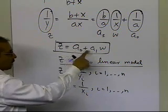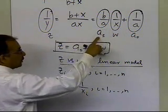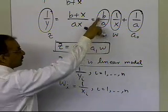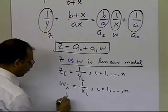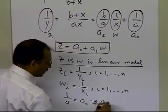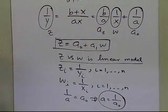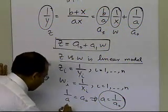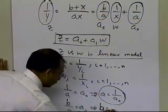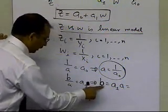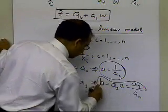But these are not the constants of my original model, the constants of my original model are a and b, but I can find those by these two substitutions I made, b by a is same as a1, and 1 by a is same as a0, so I know that 1 by a is same as a0, that tells me that a is nothing but 1 divided by a0. So once I find out my a0, all I have to take is the inverse of that, and I'll be able to find the value of a, and b by a is a1, that implies that b is equal to a1 times a, and what is a? a is 1 by a0, so a1 divided by a0. So that will give me the value of b.